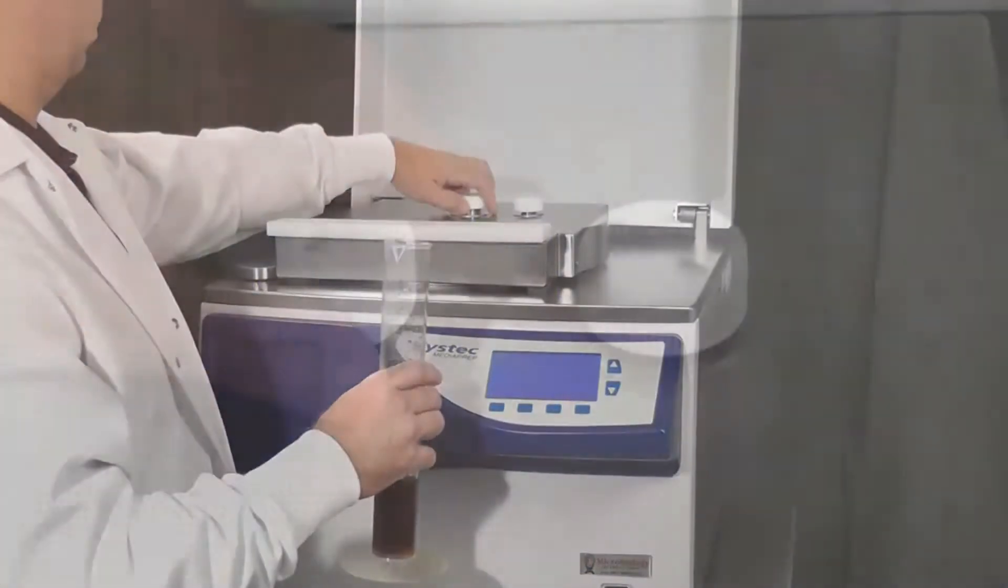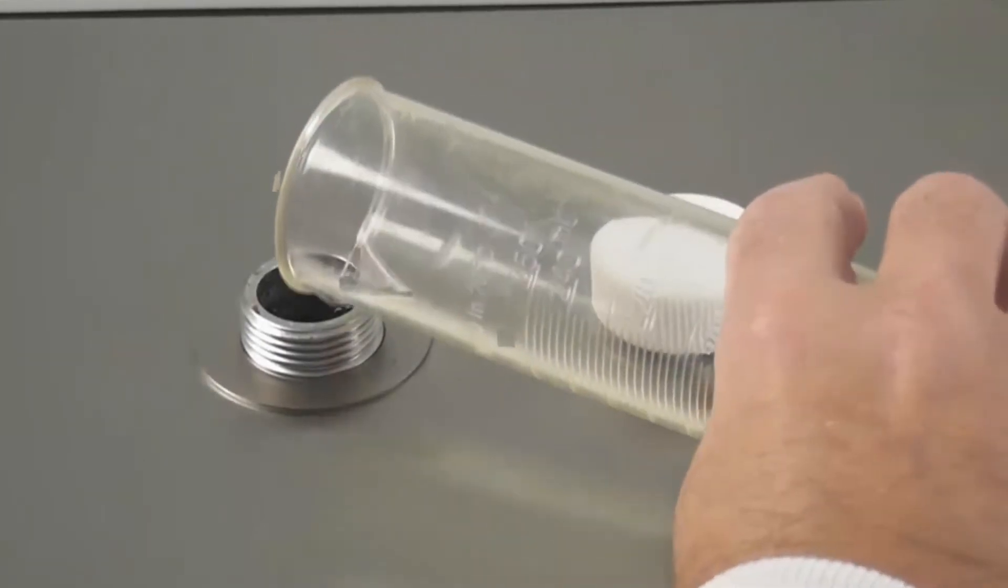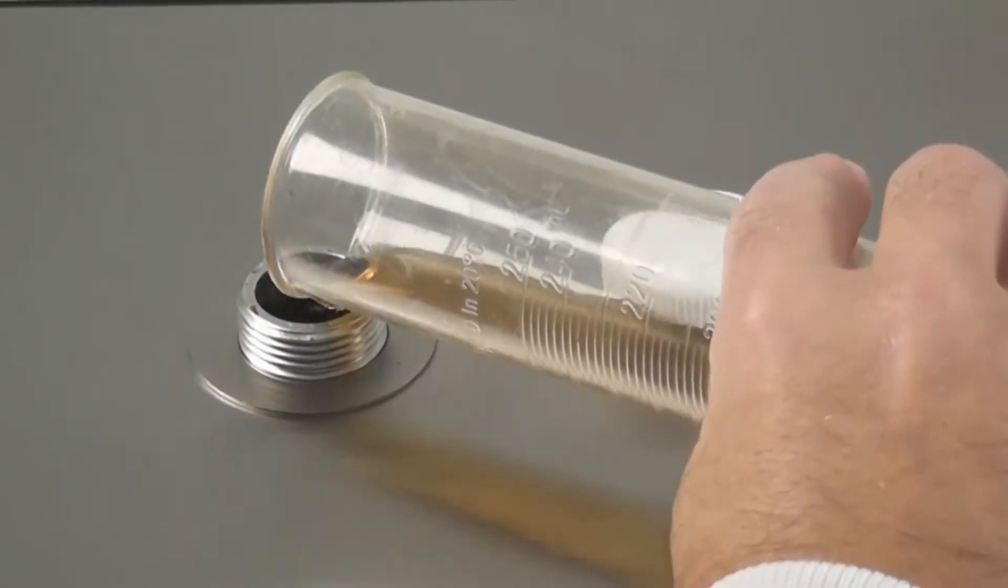If you wish to add thermolabile products or other additives after the sterilization cycle, simply remove the filling cap and pour your materials into the sterilization chamber.